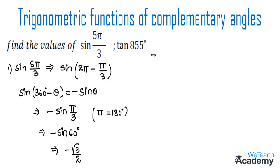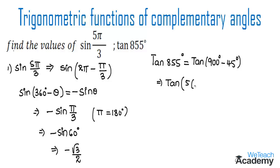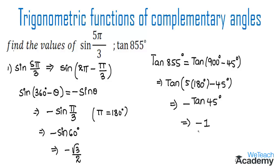Now let us consider tan(855°). We can write this as tan(900° − 45°), which is tan(5 × 180° − 45°). This is in the form of tan(180° − θ), which lies in the second quadrant. In the second quadrant only sin and cosecant are positive, so we get the result as minus tan(45°). Since tan(45°) = 1, the result is −1.